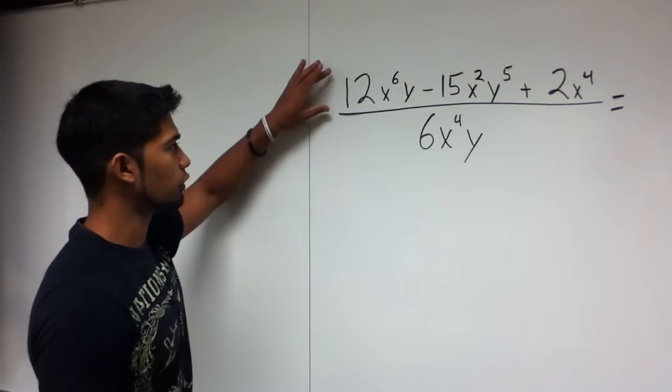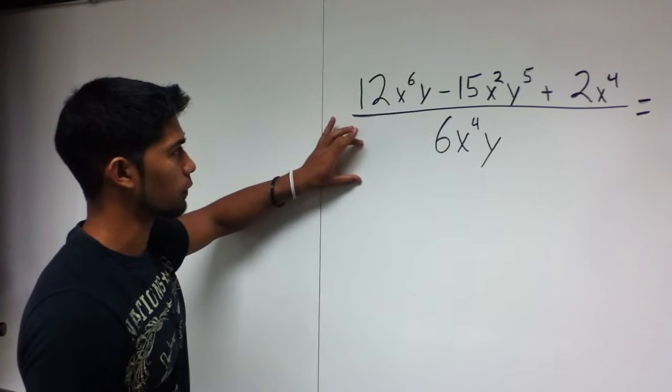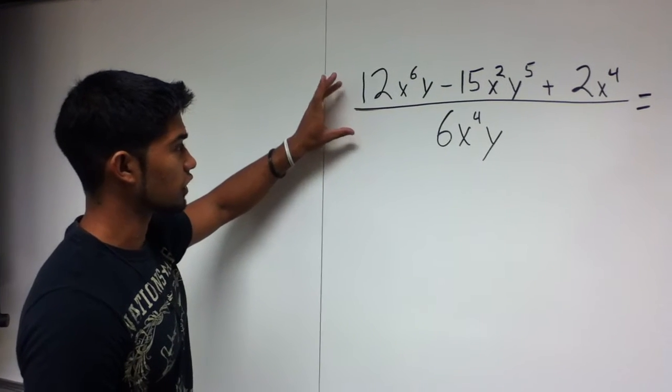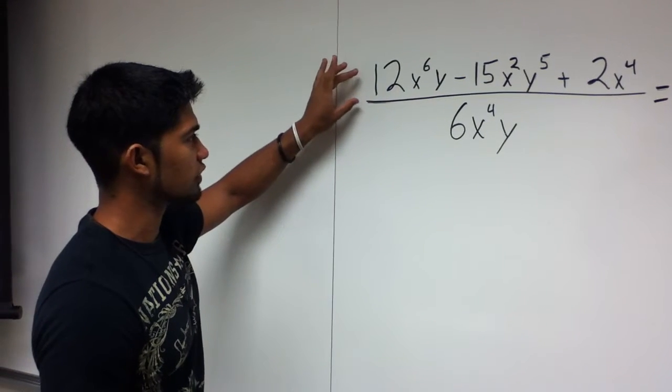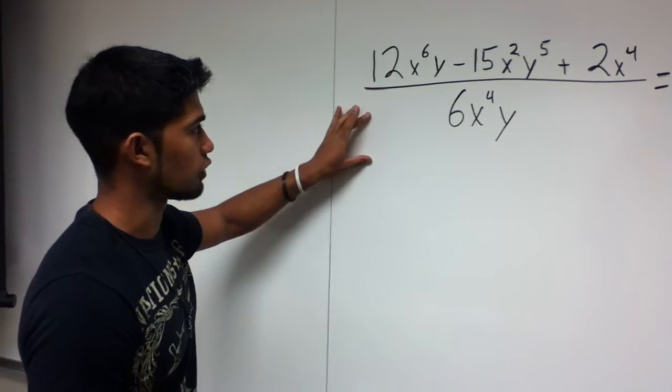Alright, today we will be working with a trinomial over a monomial. Now the way we start this problem is we break down this expression into smaller component parts, so it's easier to manage.